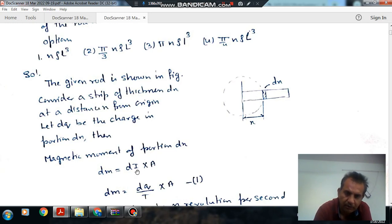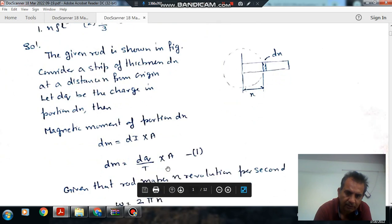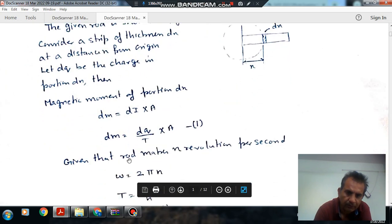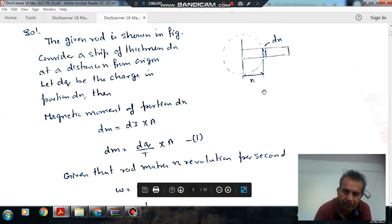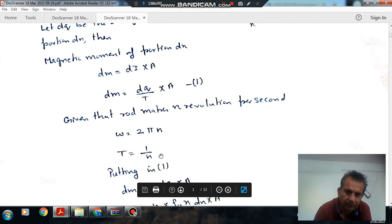For this small strip, let it carry the charge dq and the current going through is di. Magnetic moment is di into A. And di is nothing but dq by t, where t is the time period. If it makes n revolutions per second then ω = 2πn and t = 1/n.